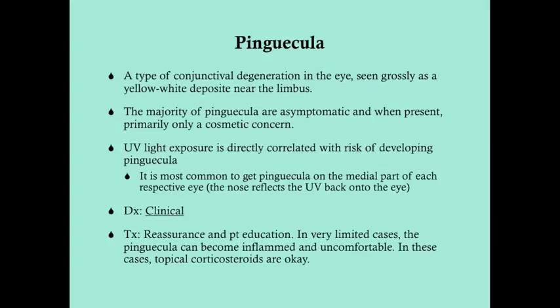The pinguecula is a type of conjunctival degeneration in the eye. A lot of times it won't be noted unless it's by you or the patient, and it's only noted visibly because these don't cause any symptoms most of the time. When you look at a pinguecula, you see a grossly yellowish-white deposit in or around the limbus — that area where you transition from sclera to cornea, right around the periphery of the iris.